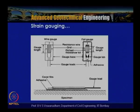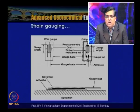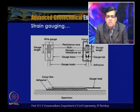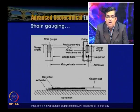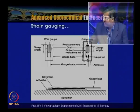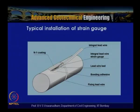Foil-type strain gauges have a gauge length with a backing material — selection of backing depends on the stiffness of the substrate. Copper-nickel alloy leads connect to lead cables, and any change in length is registered as a change in strain. These are used for example on model sheet pile walls or geogrid layers; a typical installation shows a strain gauge on a pile, with leads routed through the hollow pipe for convenience.